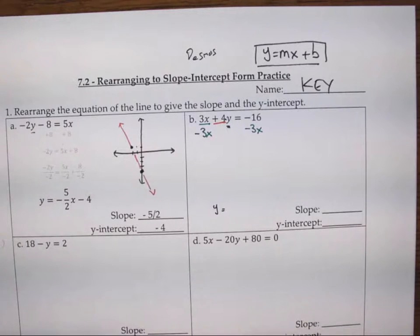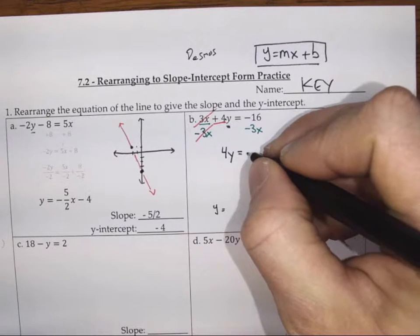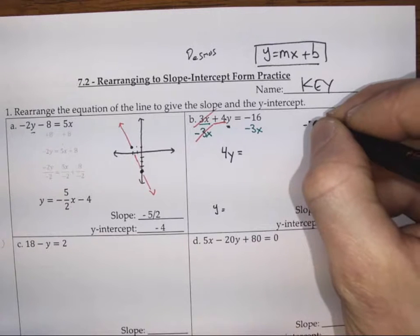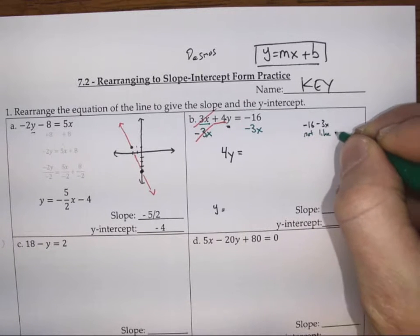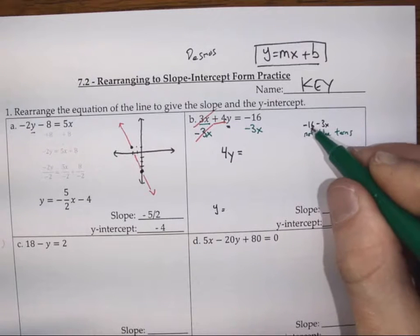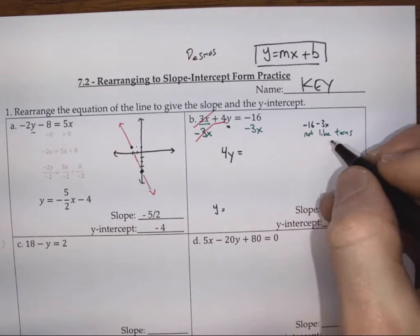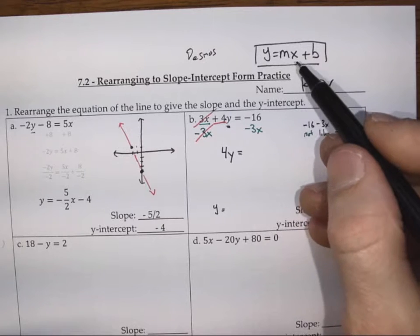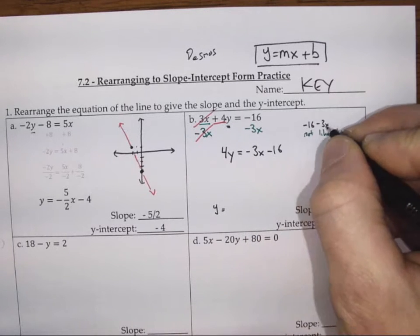That has the effect of canceling out the 3x on the left-hand side. We write a new line with 4y on the left, equal to negative 16 take away 3x. These are not like terms, so I can't group them to give negative 19x — I don't know what x is. So I can only write it as negative 16 minus 3x. Because we tend to like our x terms first, we can also rewrite that as negative 3x minus 16.